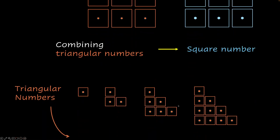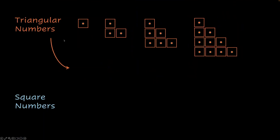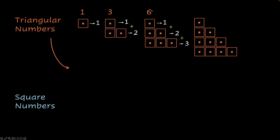Let's see more in detail. Triangular numbers start with 1. 1 is our first triangular number. To get the next triangular number, we need to add the next natural number in line to the previous triangular number. So 1 is the first natural number; next we add 2 to it. 1 plus 2 gives you 3. 3 is the next triangular number. Then we take 3 and add the next natural number, which is 3. So 1 plus 2 plus 3 gives you 6. 6 is the next triangular number.